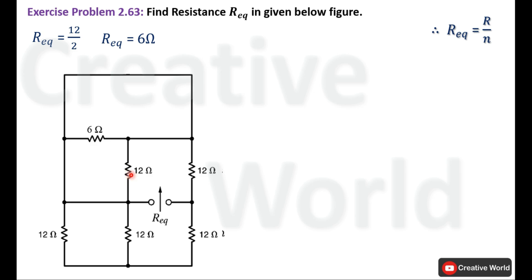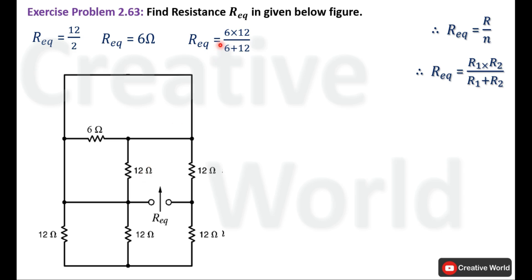Now these two resistances are in parallel connection. We find their equivalent resistance using the formula R equivalent equals R1 multiplied by R2 divided by R1 plus R2. Here R1 is 6 Ohm and R2 is 12 Ohm. The product of 6 and 12 is 72, and their sum is 18. So 72 divided by 18 gives 4 Ohm.